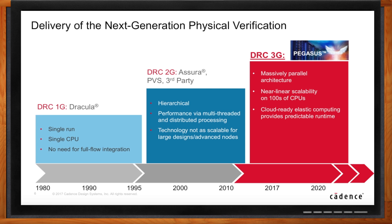From a historical viewpoint, EDA DRC has had three generations. The first generation was Dracula — single CPU, user right behind the screen with the machine warming their feet. Simple, and it worked through 0.18 micron. At 0.18 micron, you needed hierarchy support and bigger computation, so the second generation brought multi-threaded processing — tools like Asura, PVS, and third-party solutions. But at 28 nanometer, multi-threaded architecture started running out of steam. That's why we came out with Pegasus — the third generation — a massively parallel architecture with near-linear scalability on thousands of CPUs and cloud-ready.